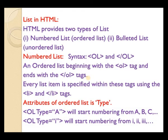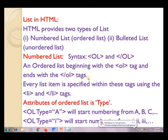Before starting the new topic, I am going to revise the previous topic of this lesson, that is List in HTML. HTML provides two types of lists: number list, called ordered list, and bullet list, called unordered list.